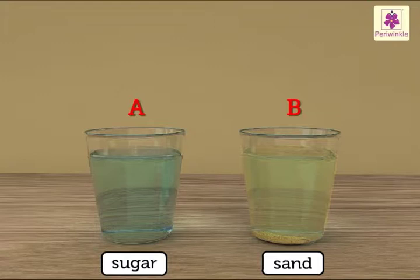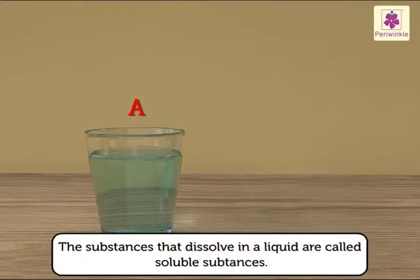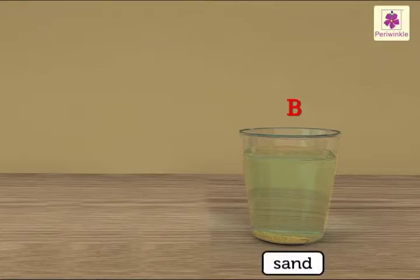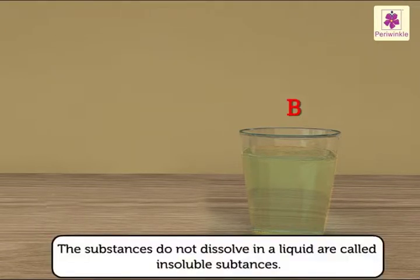Which of the two substances dissolved? We know a thing has dissolved when we can see through the water and nothing is left at the bottom of the glass. Substances that dissolve in a liquid are called soluble substances. A thing has not dissolved when the water is cloudy and there is matter or powder left at the bottom. Substances that do not dissolve in a liquid are called insoluble substances.